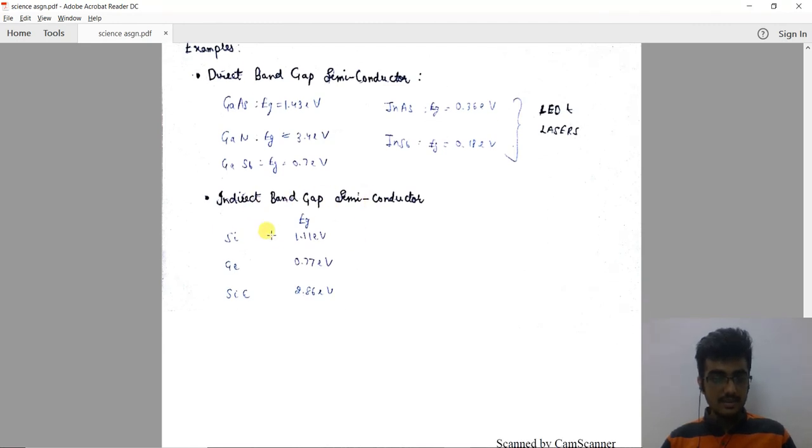Examples of indirect band gap semiconductors are silicon, germanium, and SiC with their respective Eg values. Thank you.